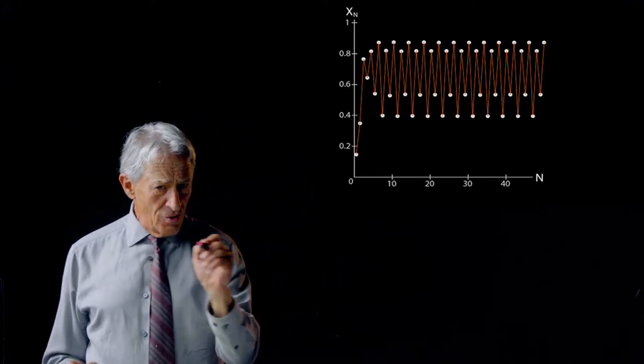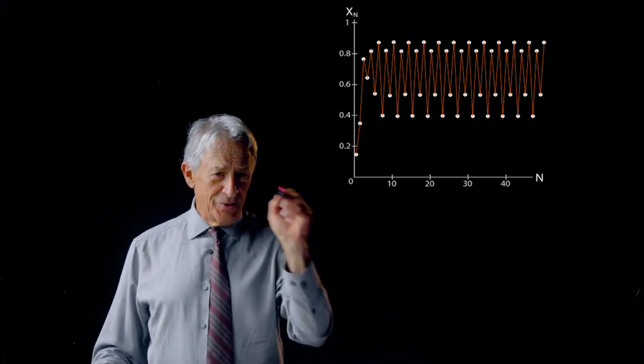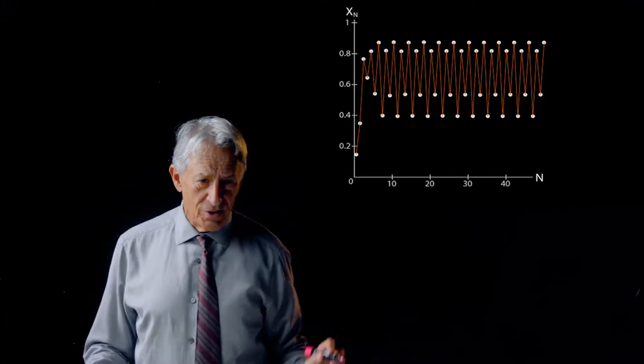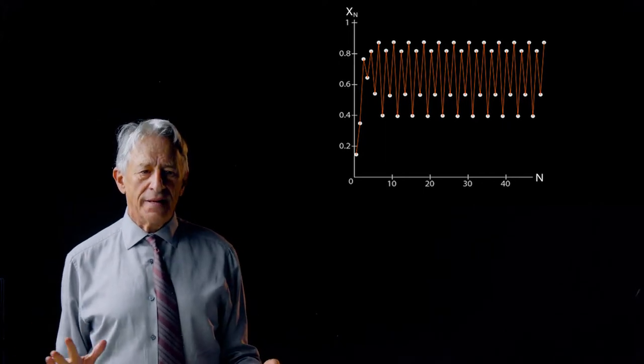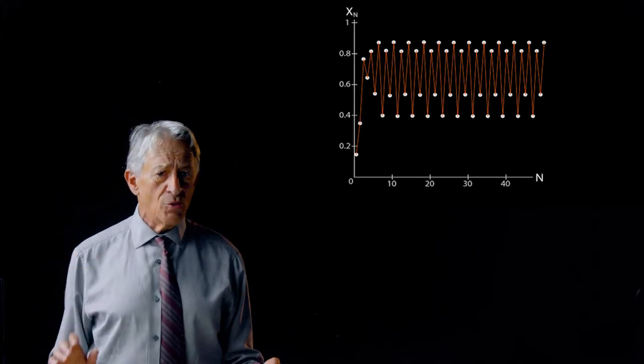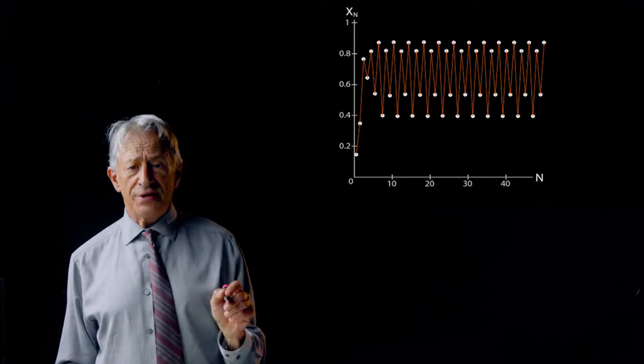But the A's are all equal, and the B's are all equal, and the C's are all equal, and the D's are all equal, which means that this is an oscillation, a periodic output. But it's just a little more complicated, it has four points instead of two.